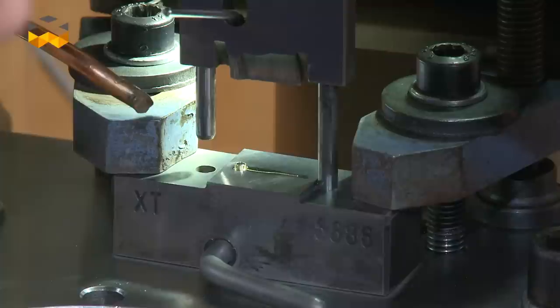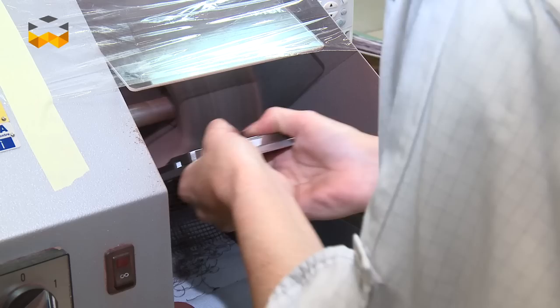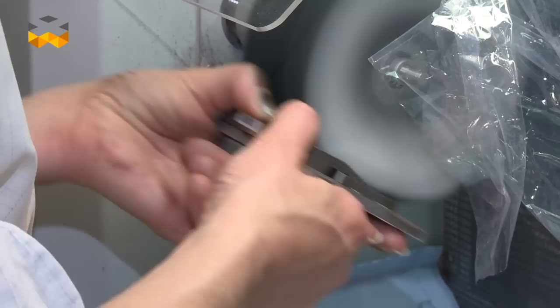Once you have the rough hands, you will have to cut it to design the volume, to create the volume of the hands. Hands that are cut to give a special volume have to be polished. Once you have that, you have almost a finished hand.